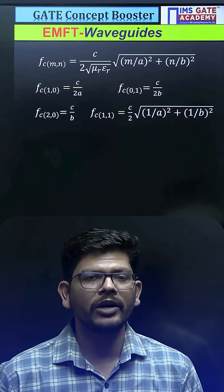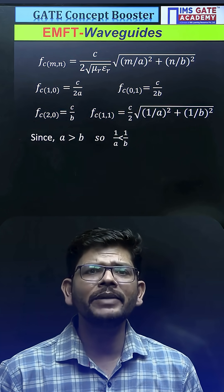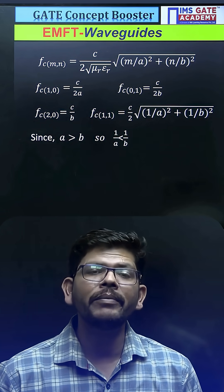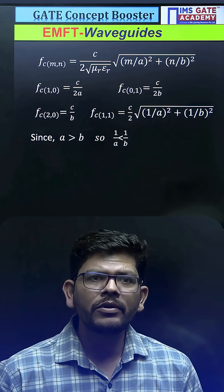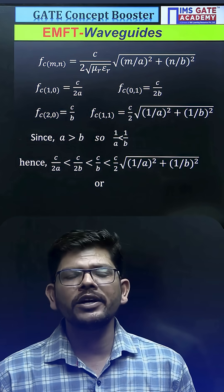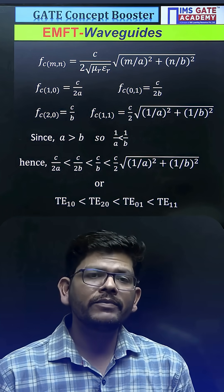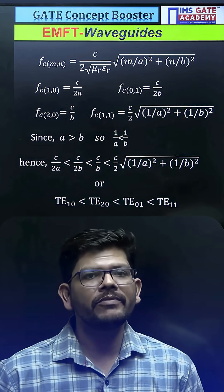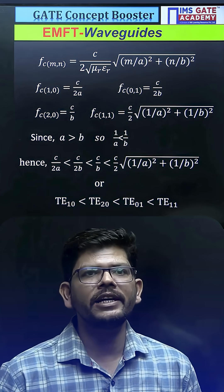Now, a has been given greater than b, so 1/a will be less than 1/b. So, increasing order of frequency will be in this order: as per this order, the increasing order of the frequency for the different modes will be first it will be TE₁₀, then it will be TE₂₀, then it will be TE₀₁, then it will be at the end TE₁₁.